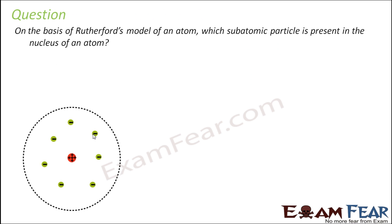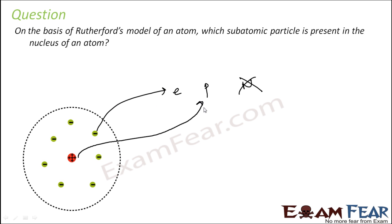With that, we'll look at a question based on the Rutherford model: which subatomic particle is present in the nucleus of an atom? When Rutherford proposed his model, only the electron and proton had been discovered — the neutron had not yet been found. So as per the Rutherford model, only protons are present in the nucleus.